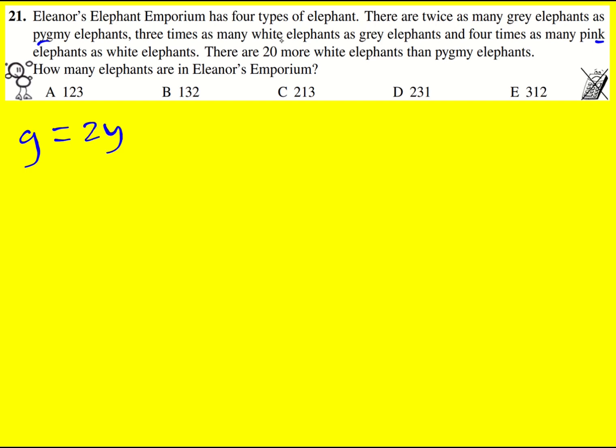And then there are three times as many white elephants as grey elephants, so W for the number of white elephants is going to be 3G, which is going to be 3 times 2Y, which is 6Y. It might be useful to keep everything in terms of Y, it might not, but let's just do that for the time being, because we've got two things related now to pygmy elephants.